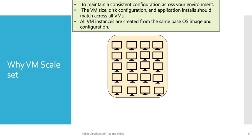So that is what is known as VM Scale Sets. Now, why VM Scale Sets? To maintain a consistent configuration across your environment. If you have to increase the number of instances in an IaaS environment, you have to make sure all instances have the same configuration — the VM size, application installation should match across all virtual machines. Unlike PaaS services like App Services where configuration is taken care of by Microsoft, with IaaS and the shared responsibility model you have to ensure this configuration is properly defined, and that is where VM Scale Sets help. All VM instances are created from the same base OS image and configuration.